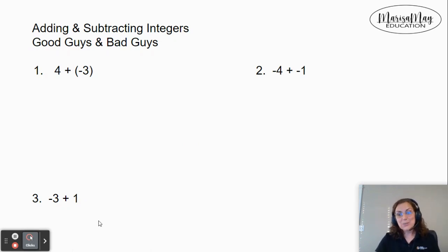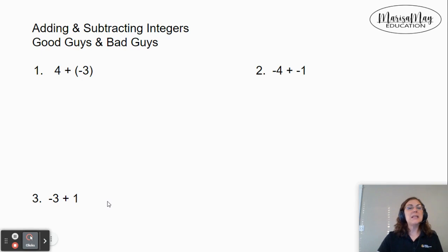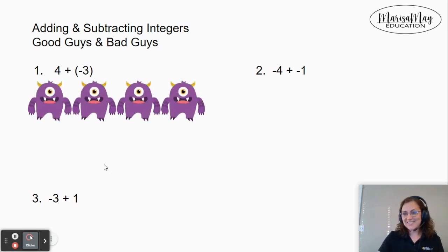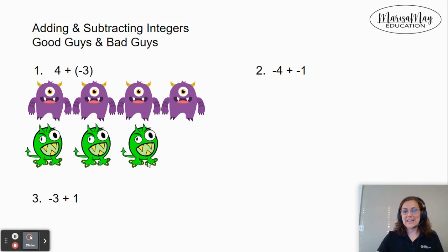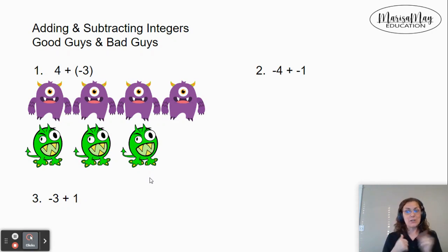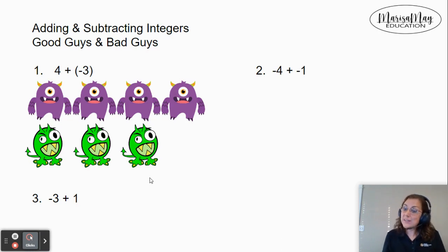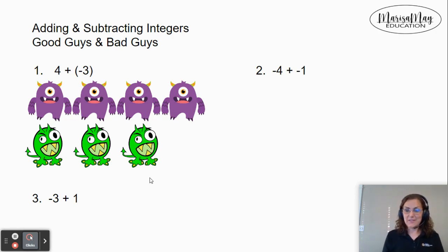Next, let's take a look at adding and subtracting integers. I like to do this with what I call good guys and bad guys. When you see a positive number, think of those as the good guys. When you see a negative number, think of those as the bad guys. So for number one — positive 4 plus negative 3 — the positive 4 represents four good guys, and negative 3 represents three bad guys. When the good guys and bad guys do battle, one good guy takes out one bad guy and vice versa. So who's going to win? The good guys are — because there's more of them. How many more? One. So since there's one good guy left over, and the good guys are positive, the answer is positive 1.